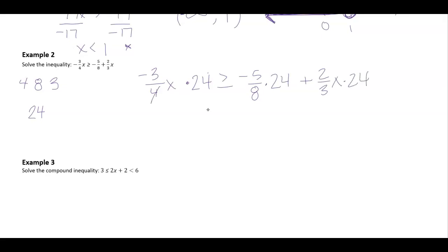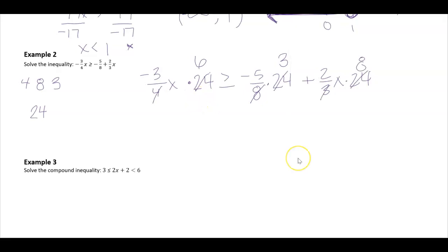Alright, these would cancel and I would be left with 6. These would cancel and I'd be left with 3. These would cancel and I'd be left with 8. So then I would have negative 18x is greater than or equal to negative 15 plus 16x.